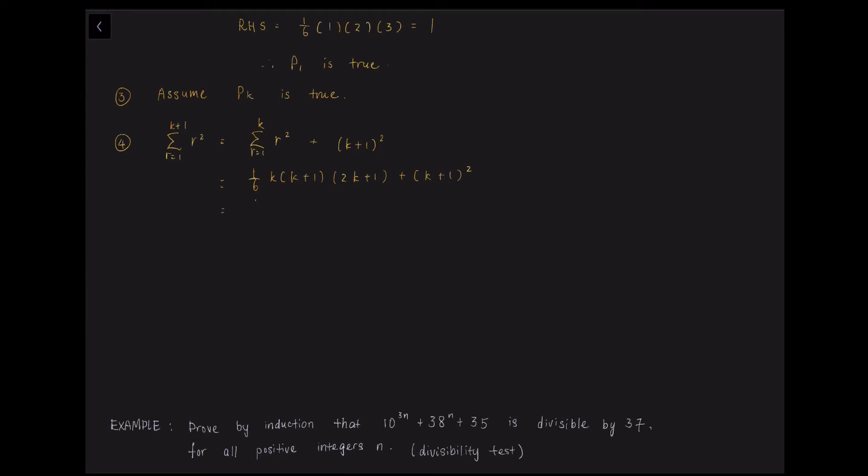And then now we simplify this equation further. So we will get 1/6 times (K+1) times the rest as we factorize out the (K+1) component. So once we factorize it, we further simplify the bracketed equations. So we will get 2K squared plus 7K plus 6.